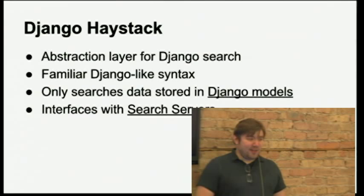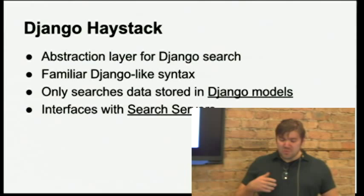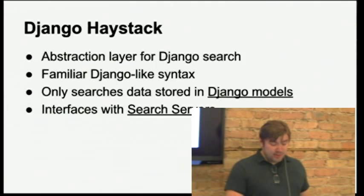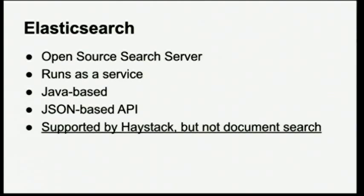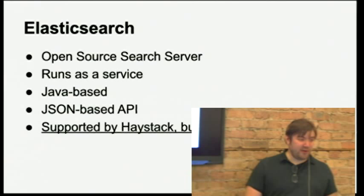One nice thing about Haystack is that it interfaces with a lot of search backend servers like Elasticsearch, Solr, Xapian, Whoosh, and possibly others. Elasticsearch is my favorite search backend for Haystack. It's an open source server written in Java. You can run it on a port and interface with it that way. It has a JSON syntax so you can query it from various languages, and there are lots of Python and other language tools to interface with it.